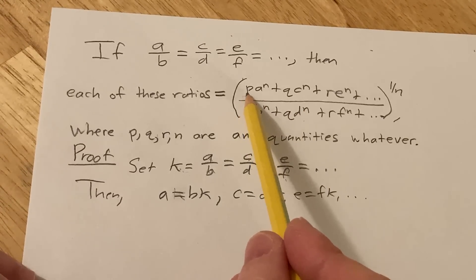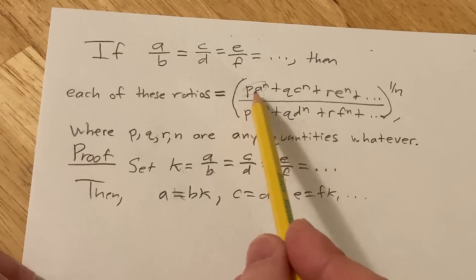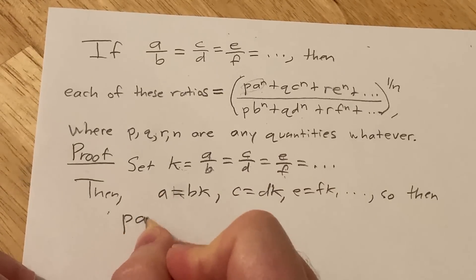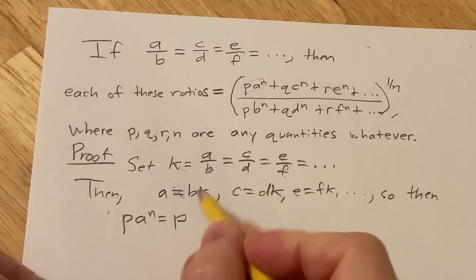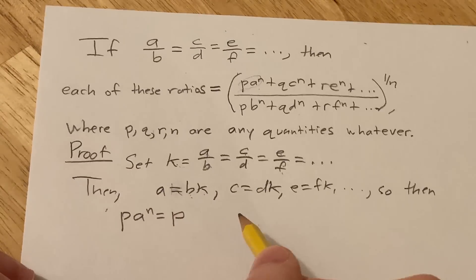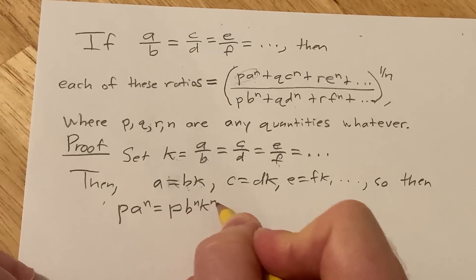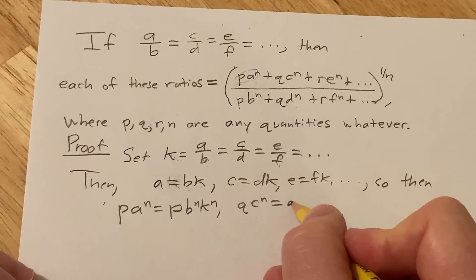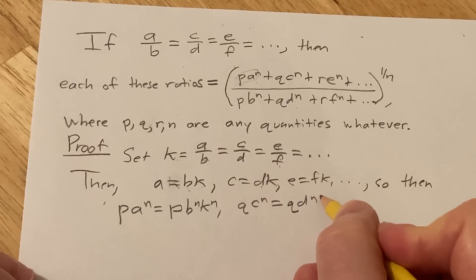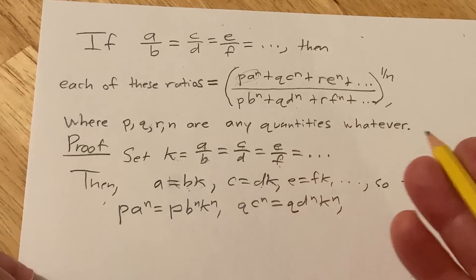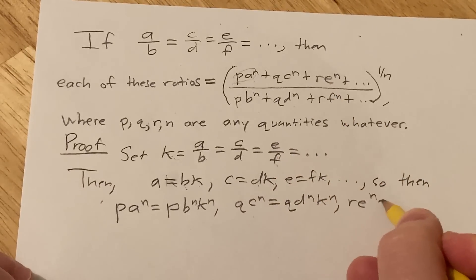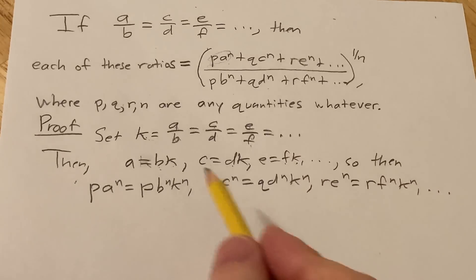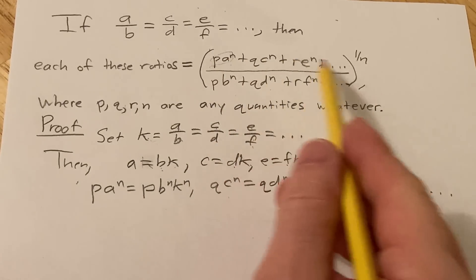Now let's work out what the numerator is — specifically what is PA^N? PA^N is going to be P times B^N times K^N, because we're raising BK to the Nth power. And then QC^N is going to be Q times D^N times K^N. And then RE^N is going to be R times F^N times K^N, et cetera. So we've worked out the numerator, at least what's visible — because this goes on and we don't know how far.